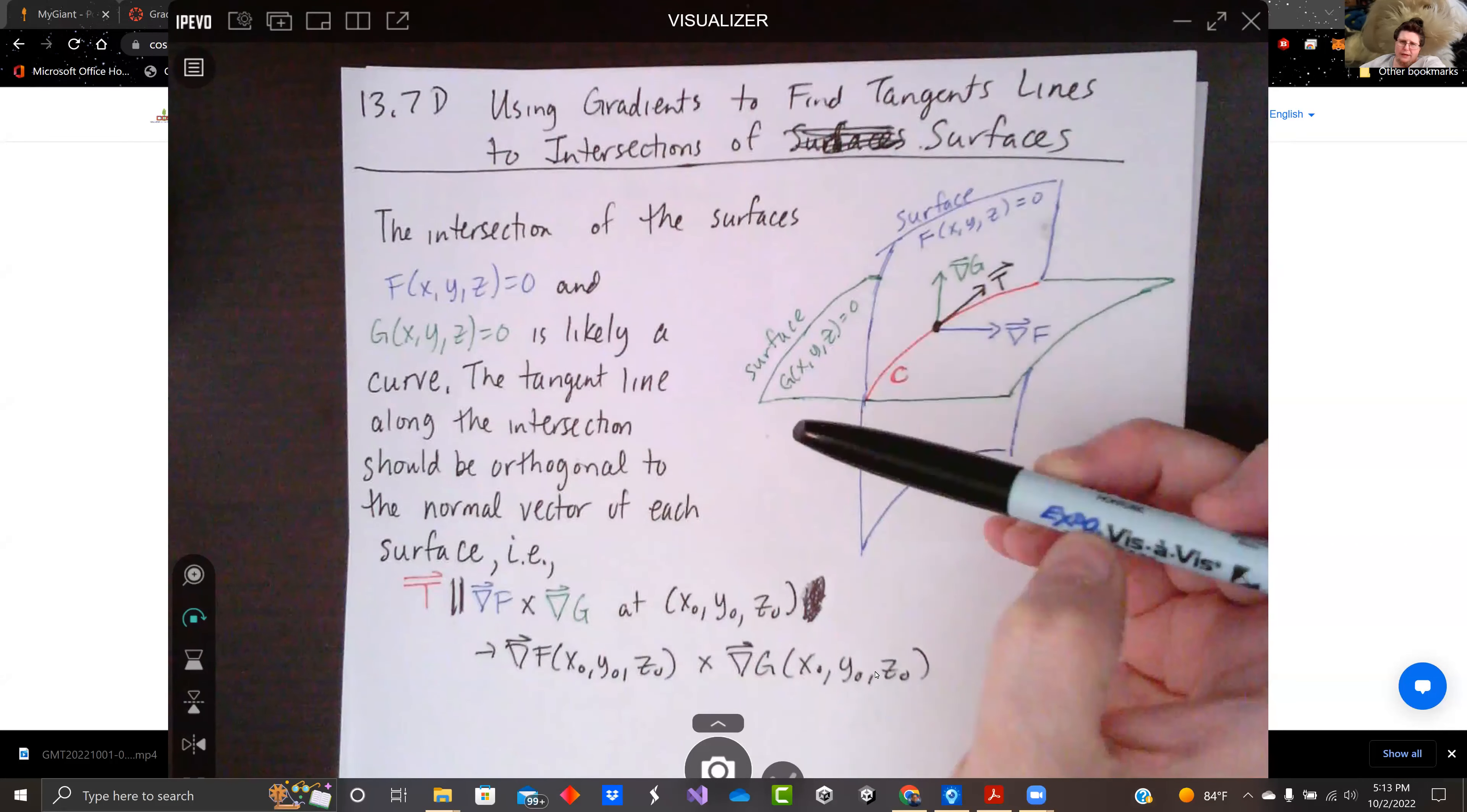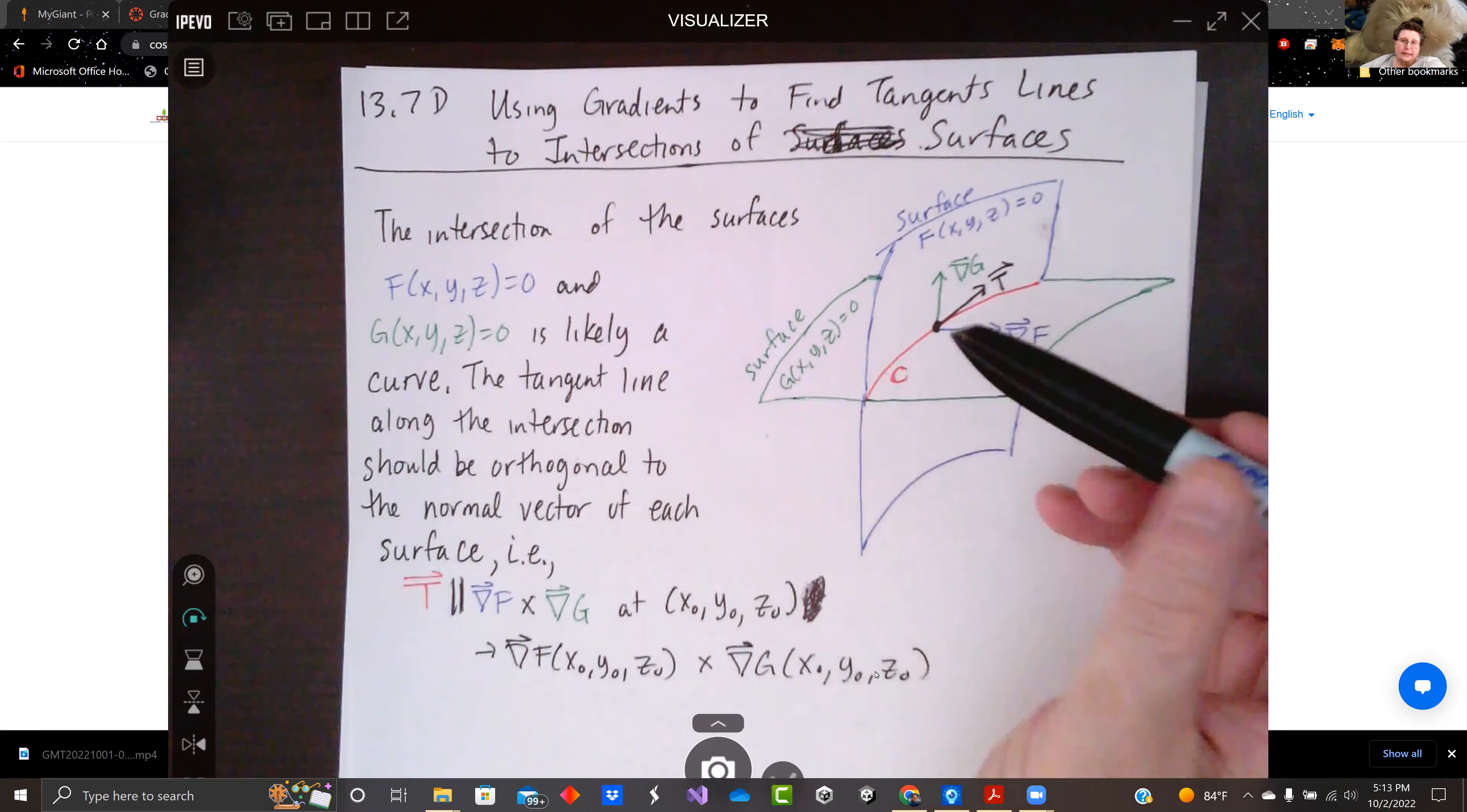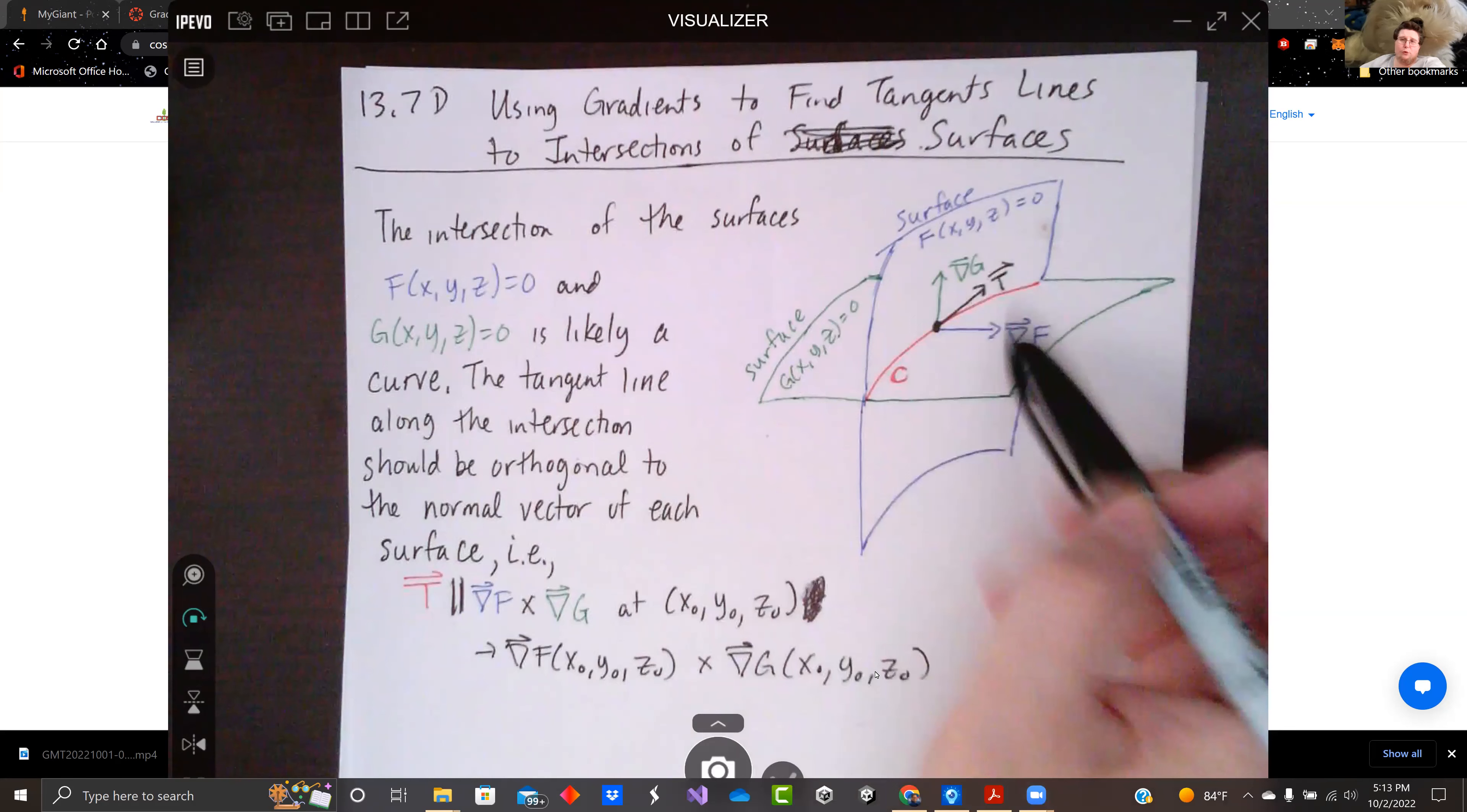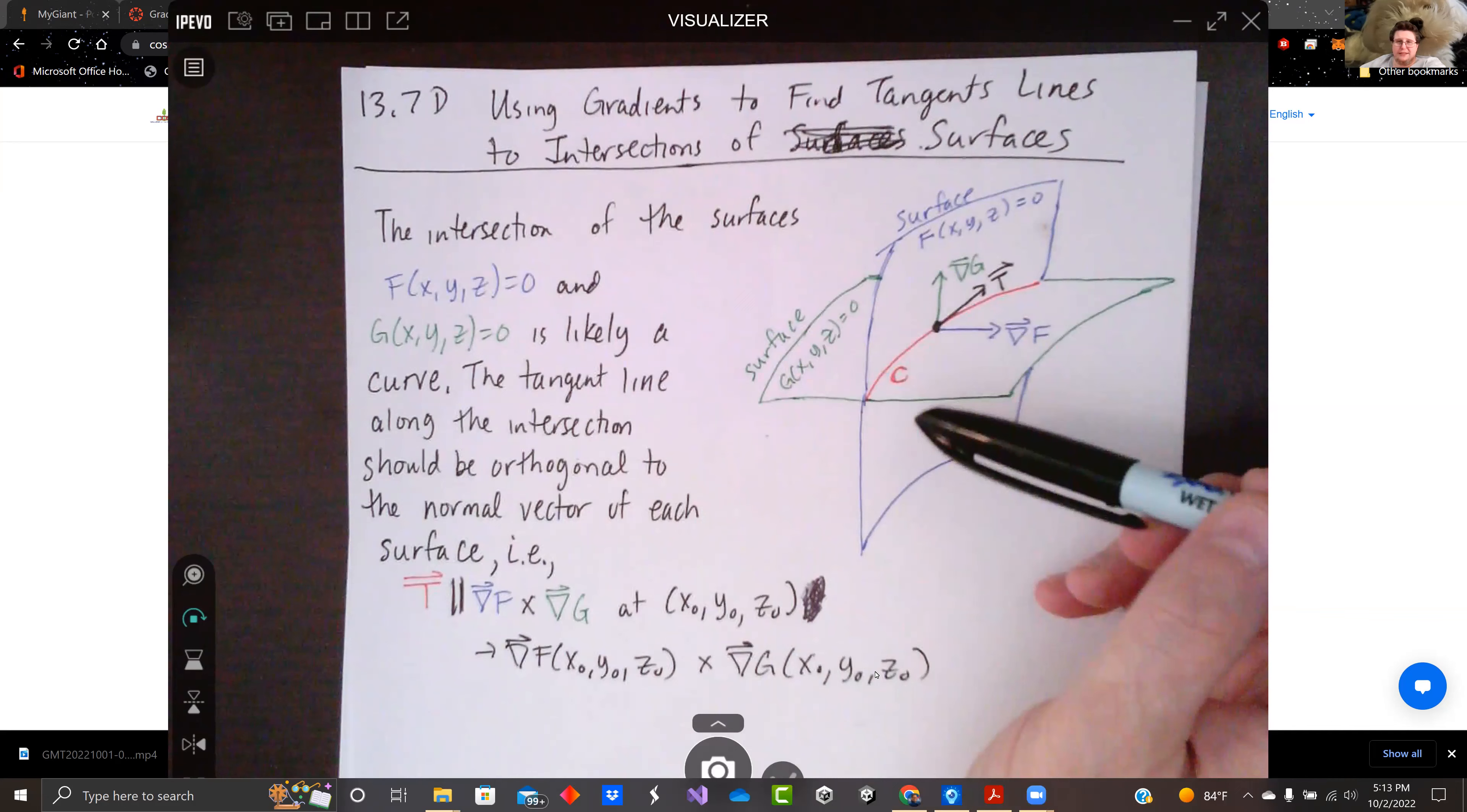Now, if we want to find a tangent line to some point along the curve C, we need a vector that's in that direction. And that vector should be orthogonal to both the normal vectors of the surfaces.